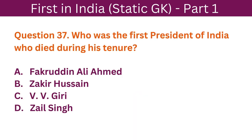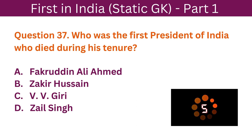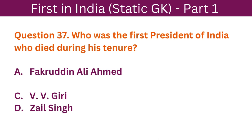Question 37: Who was the first President of India who died during his tenure? A. Fakhruddin Ali Ahmed. B. Zakir Hussain. C. V.V. Giri. D. Zail Singh. The correct answer is B. Zakir Hussain.